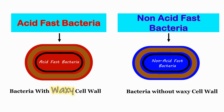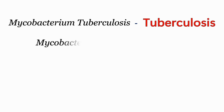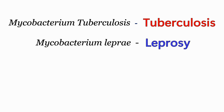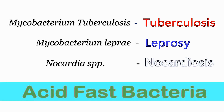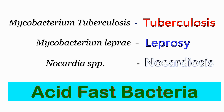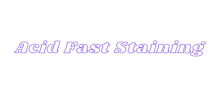After acid-fast staining, acid-fast bacteria appear red in color and non-acid-fast bacteria appear blue in color. Mycobacterium tuberculosis, which causes tuberculosis, Mycobacterium leprae, which causes leprosy, and many Nocardia species, which cause nocardiasis, are examples of acid-fast bacteria. So acid-fast bacteria are present in the genus Mycobacterium and Nocardia, and all these bacteria are stained using the acid-fast staining method.